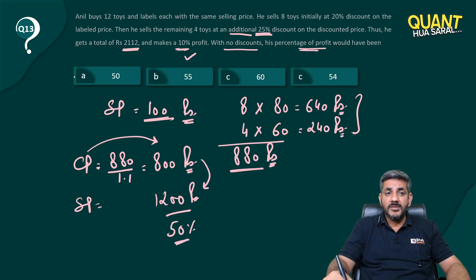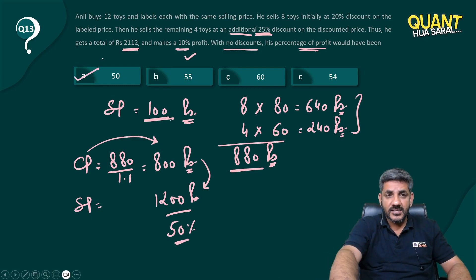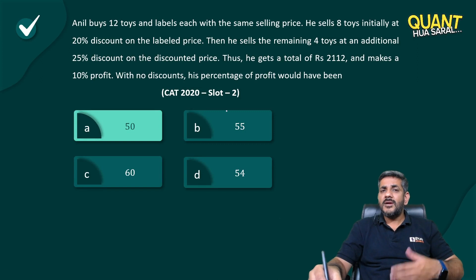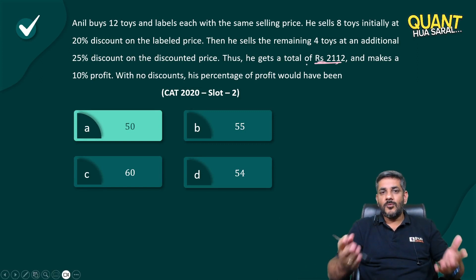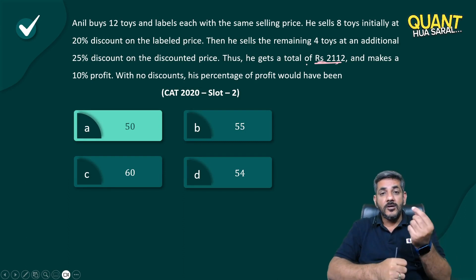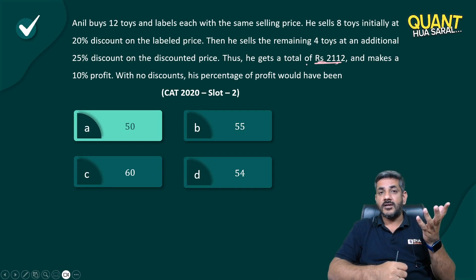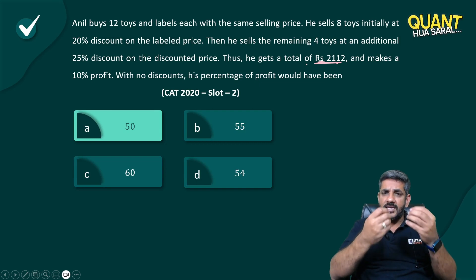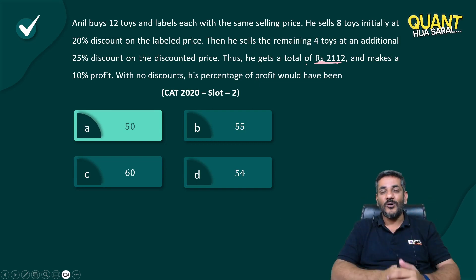You might be thinking, what is the role of Rs. 2112? There is no role of this number. When the question is asking about percentage profit and all other values are given in terms of percentages, one single amount does not make any difference or impact on the question. You can take it as anything of your choice. That's what I call aptitude.